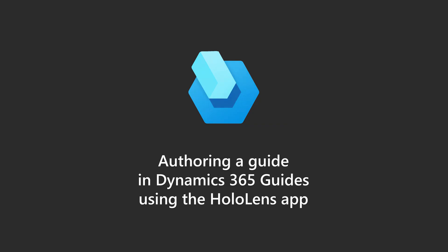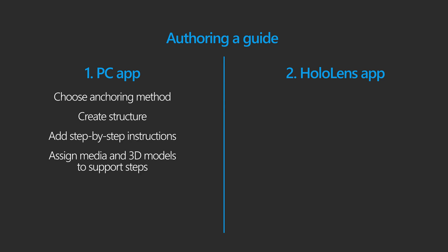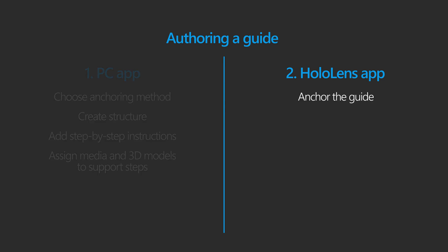This video provides a quick overview of the second step in authoring a guide in Dynamics 365 Guides using the HoloLens app. After you have used the PC app for the first step of the authoring process, you use the HoloLens app to anchor the guide, place holograms in the real world, add dotted lines to connect instruction cards to where the work gets done, add styles, and test the guide.